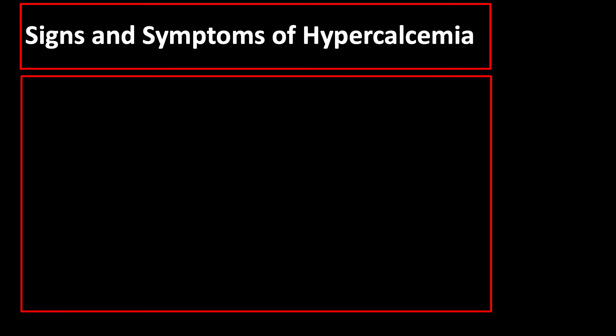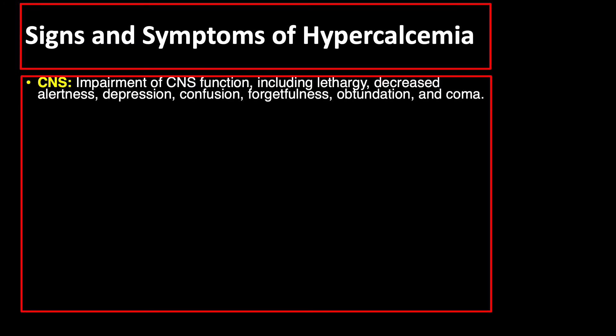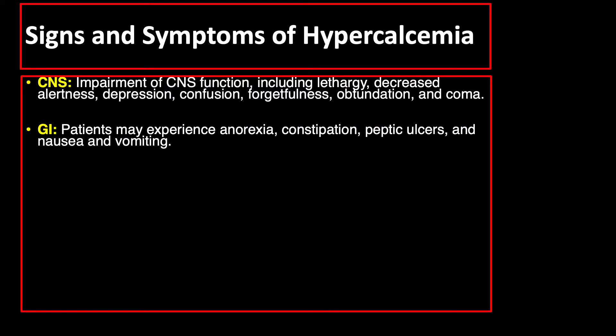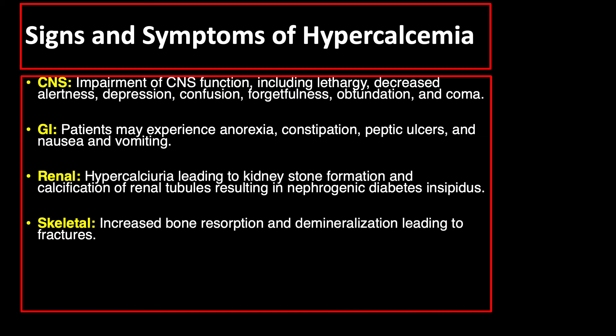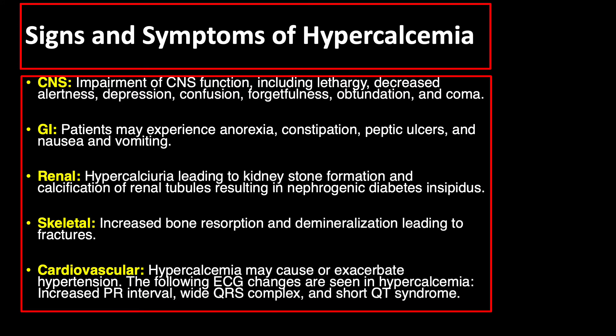The signs and symptoms of hypercalcemia usually involve the central nervous system, the gastrointestinal tract, the renal system, the skeletal system, and the cardiovascular system, each with their respective manifestations.